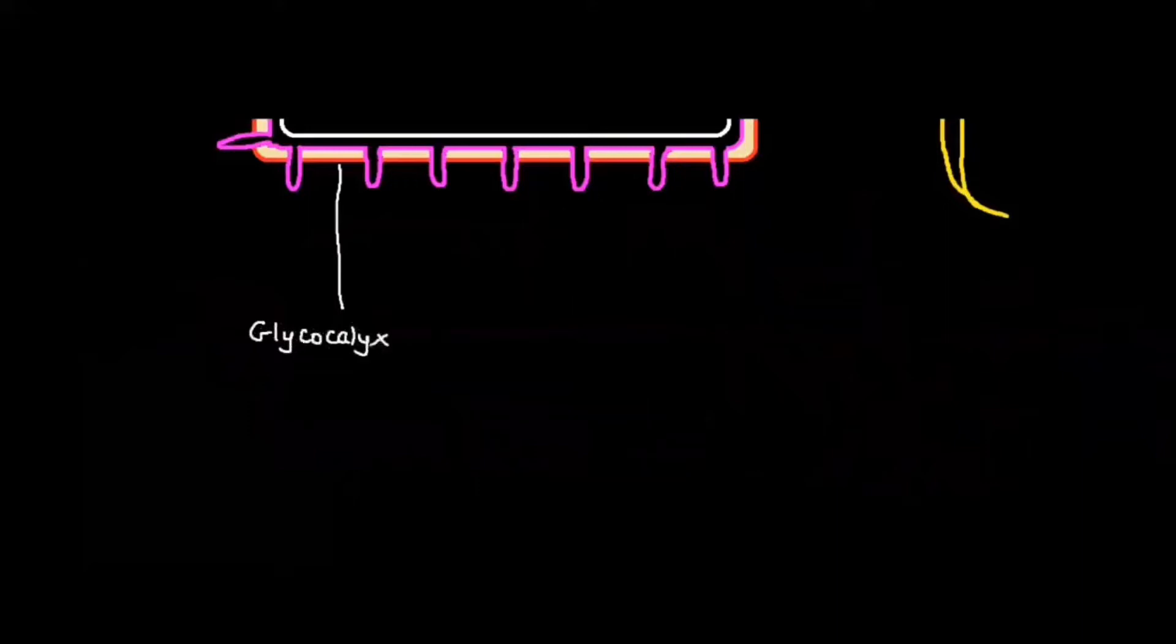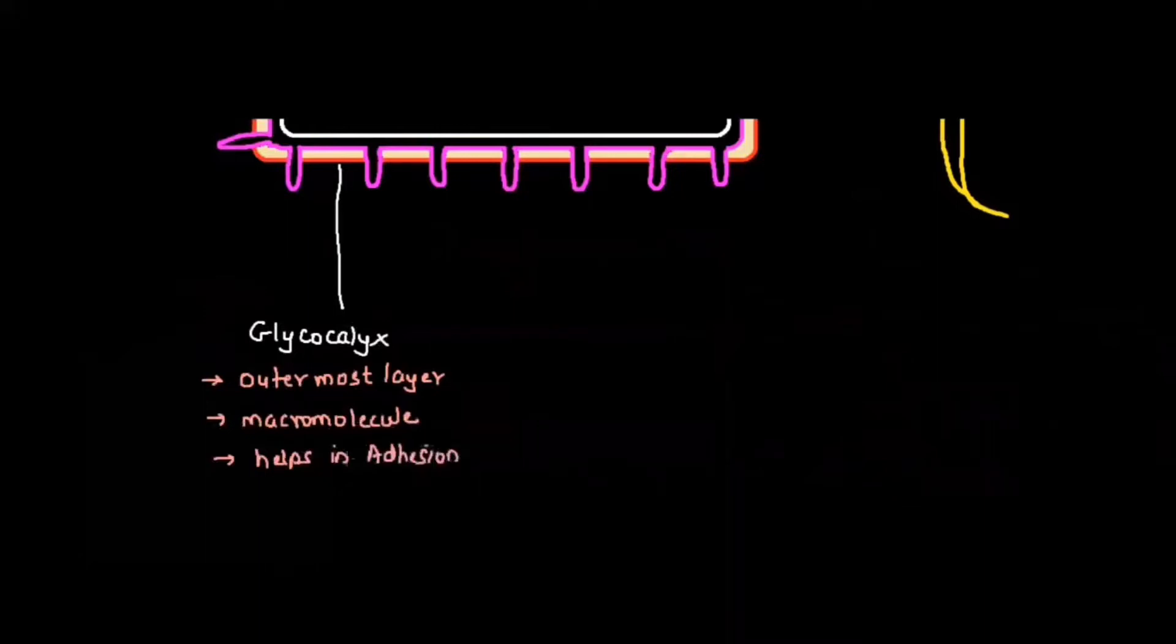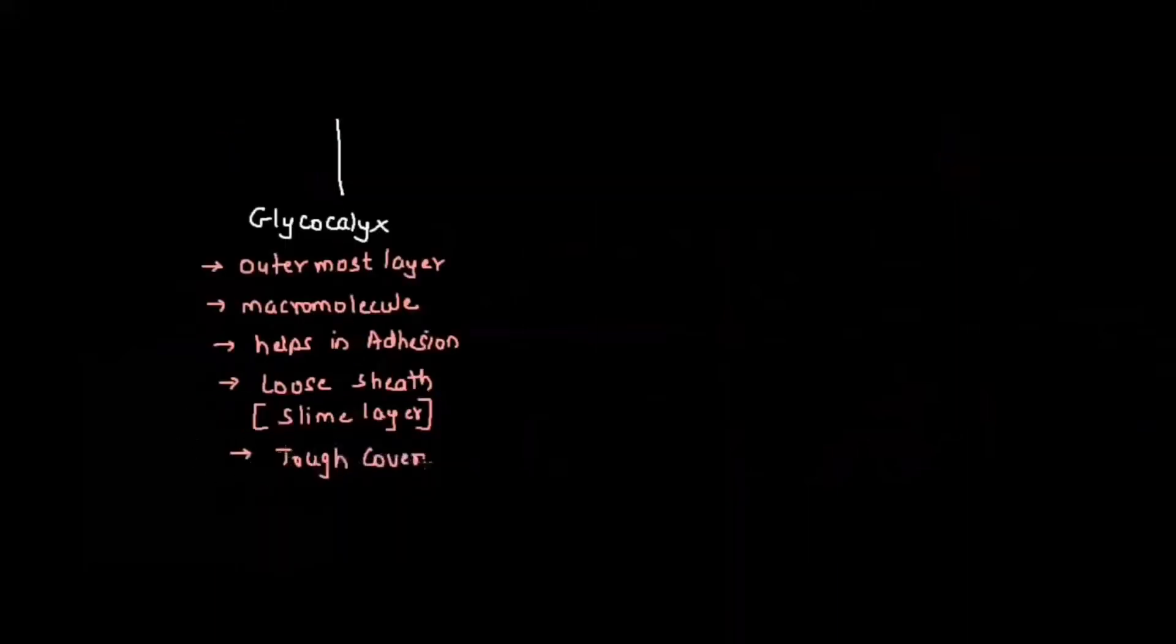This is the first outermost layer of the bacterial cell called glycocalyx. Whenever we talk about glycocalyx, remember it is the outermost layer, a macromolecule that helps in adhesion or sticking. Sometimes the glycocalyx is a loose sheet called a slime layer, or sometimes it is a tough covering called a capsule.